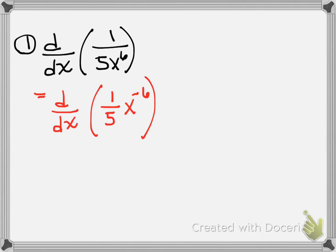We know how to take the derivative of x to the negative 6th. So this is 1/5 times the derivative of x to the negative 6th.